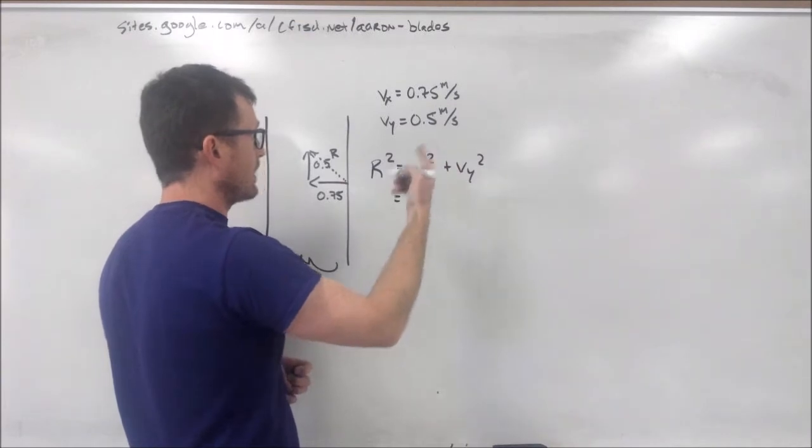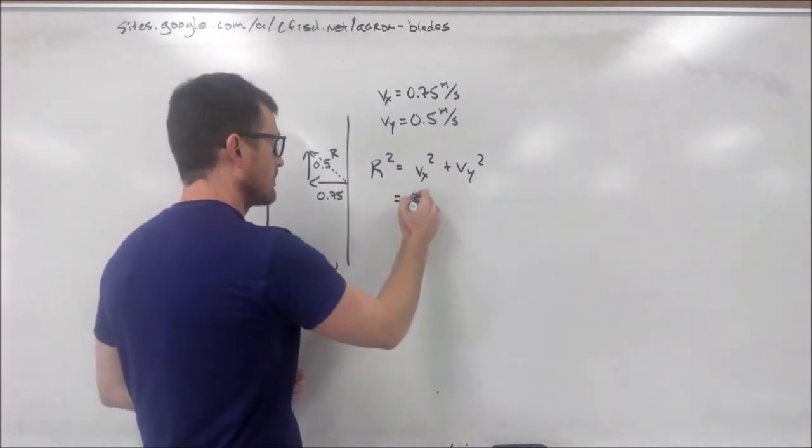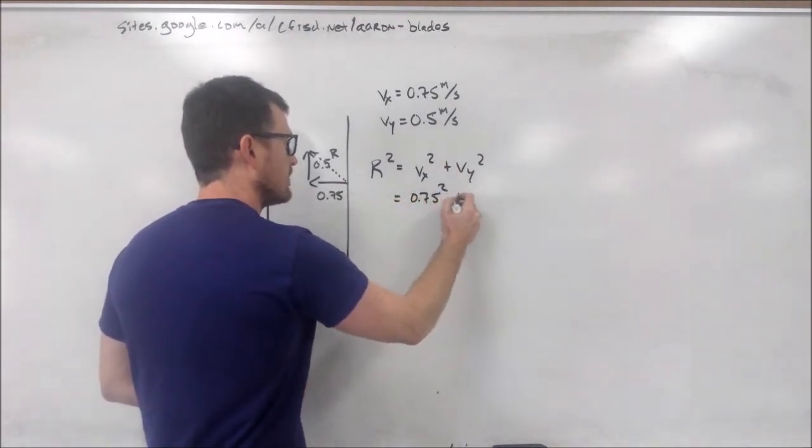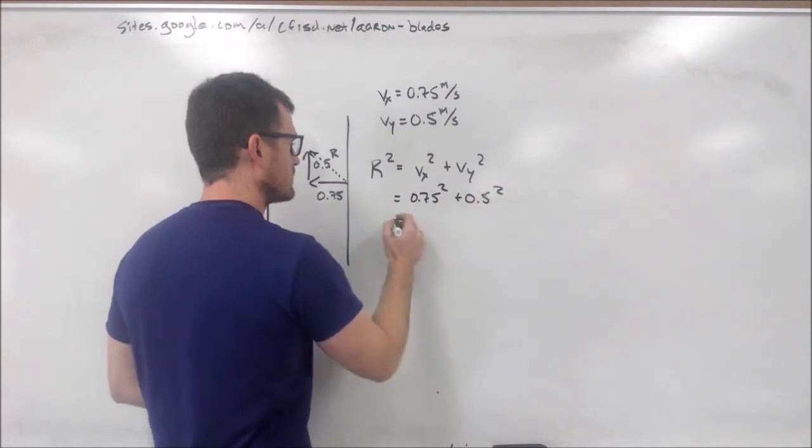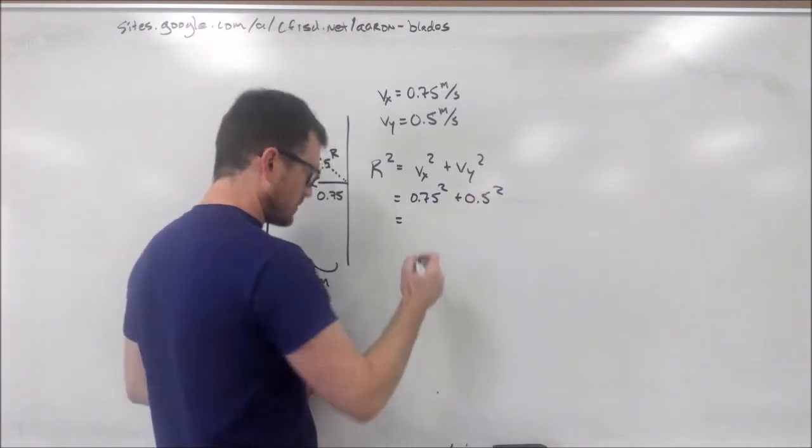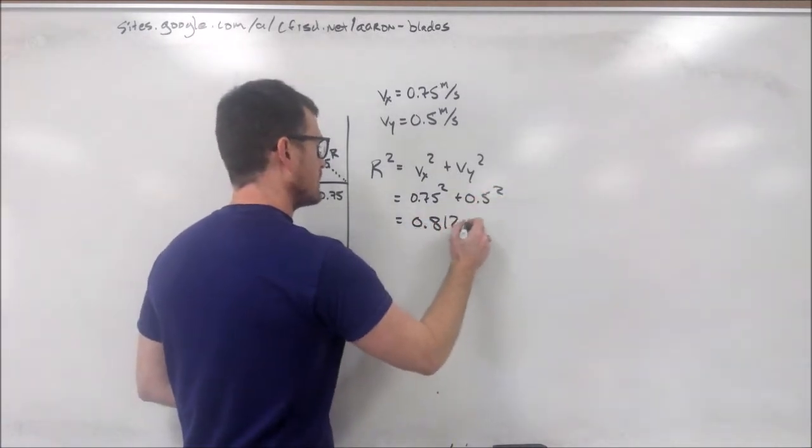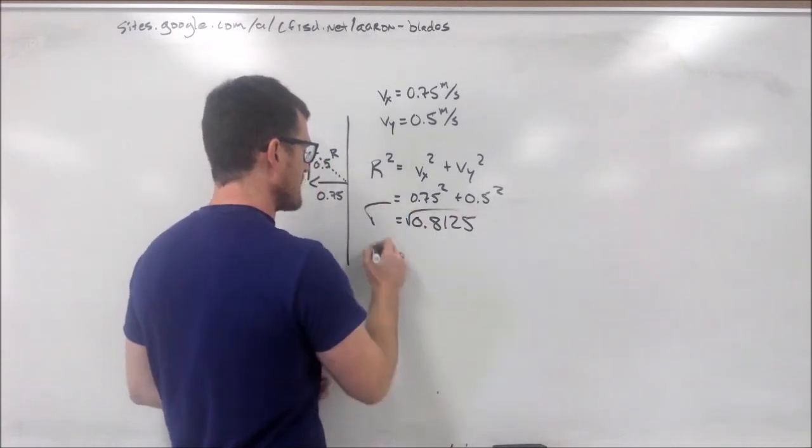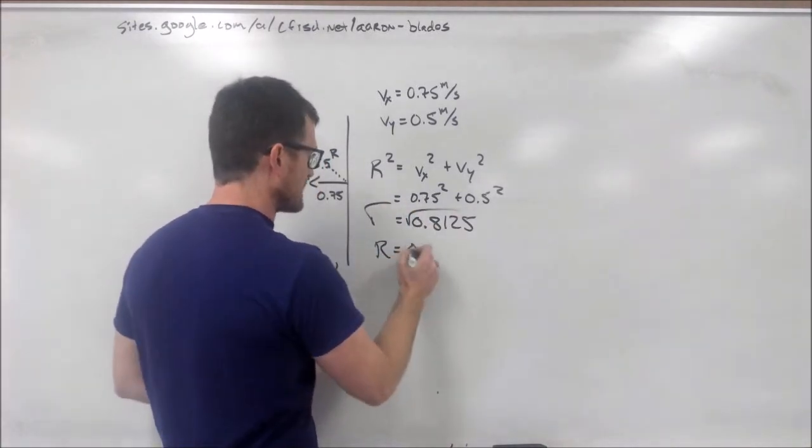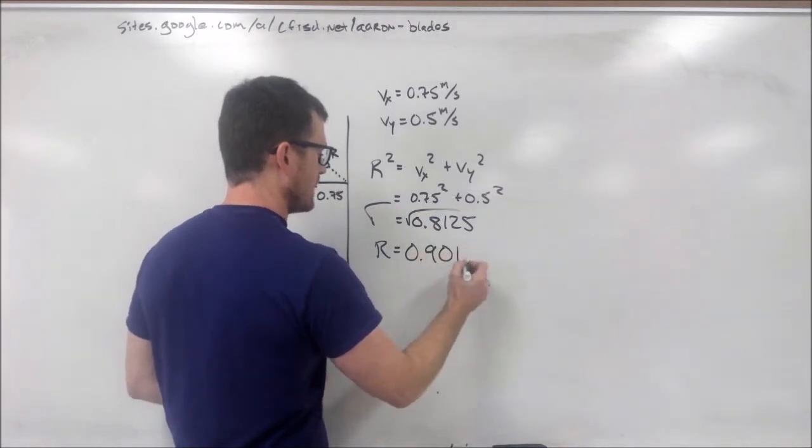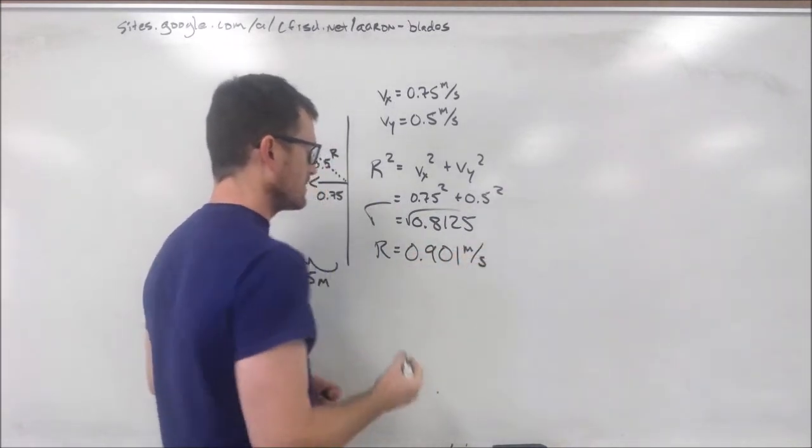So, 0.75 squared plus 0.5 squared. That gives us an R squared of 0.8125, or if we square root both sides, we end up with a resultant velocity of 0.91 meters per second.